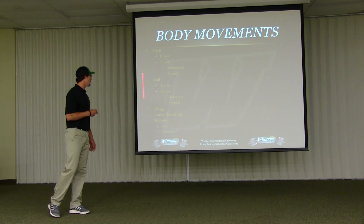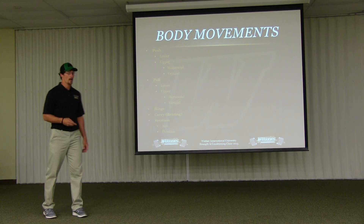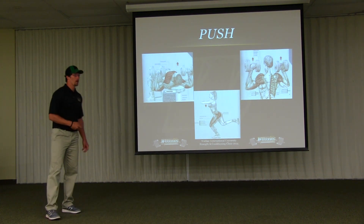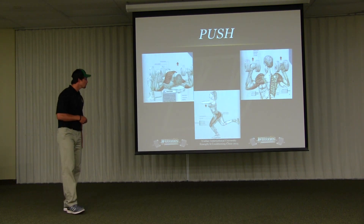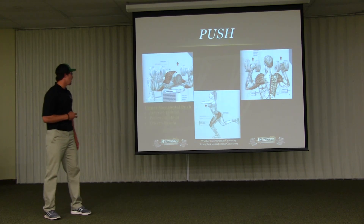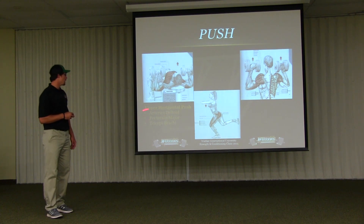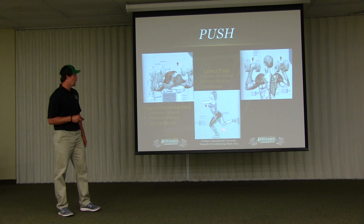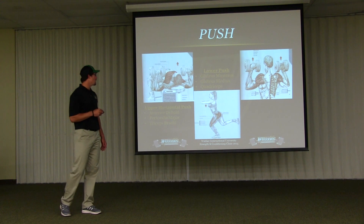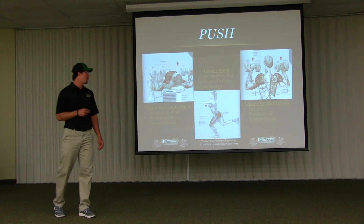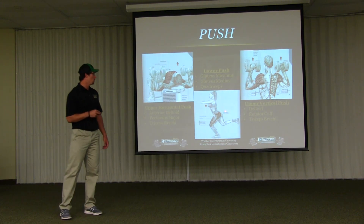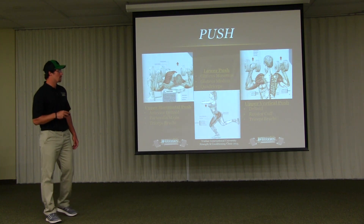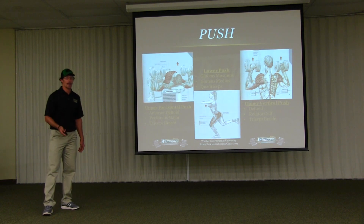The next few slides go over the simple movements and how I classify them. Starting with the push: for the upper horizontal push, we've got a dumbbell bench press working the anterior delts, pec major, and triceps. The lower push is a single-leg rear foot elevated squat working the glute max, glute med, and quadriceps. And the upper vertical push is a standard dumbbell shoulder press working the delts, rotator cuff, and triceps. We're going through movements but also training more than one muscle at a time — that's key for me with limited time in the weight room.